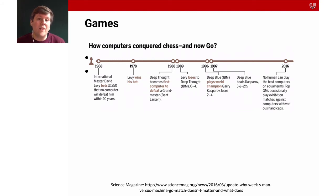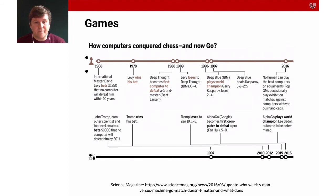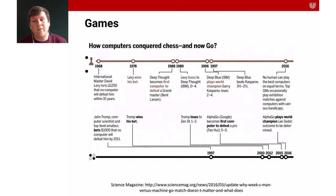In the chess timeline, in 1968 international master David Levy bet that no computer would defeat him — he won his bet. But ten years later the first computer defeated a grandmaster, and not even ten years after that, a machine beat world champion Garry Kasparov. By 2016, no human can play against the best computers. A similar timeline exists for Go, where a combination of machine learning techniques beat world champion Lee Sedol.